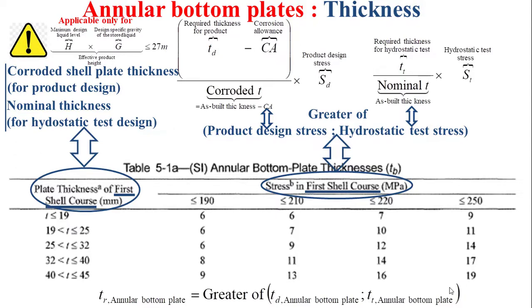The effective product height is the product of the maximum design liquid level, denoted by H, and the design specific gravity of the stored liquid, denoted by G.